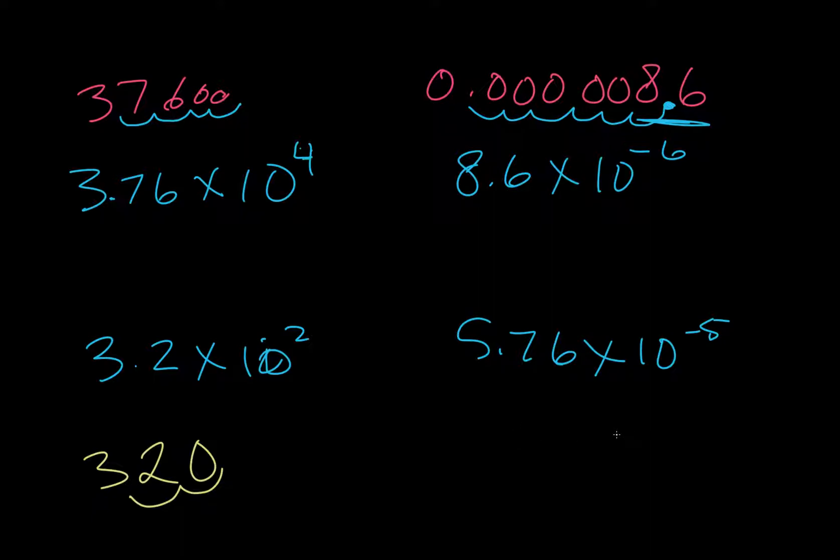Right here I'm going to write my 5.76. My decimal would be here, but I'm going to go in the negative direction: one, two, three, four, five. So I have zero, zero, zero, zero, zero point zero zero zero five seven six. That is what in regular decimal notation would be for this value.